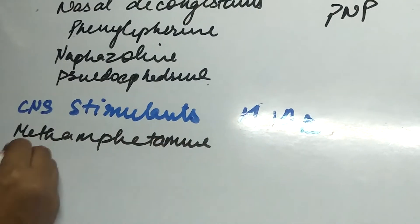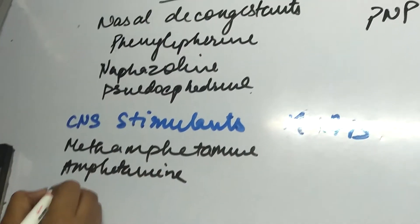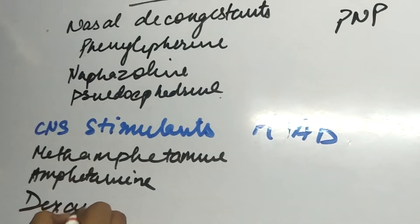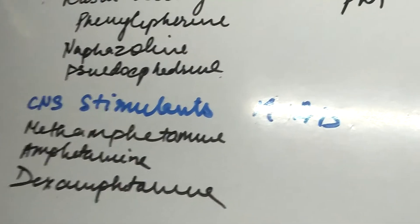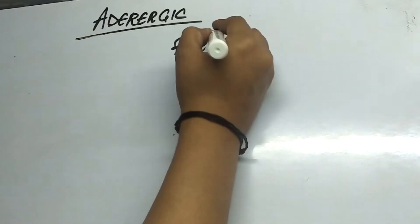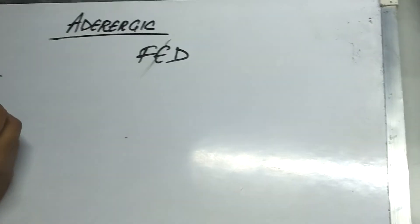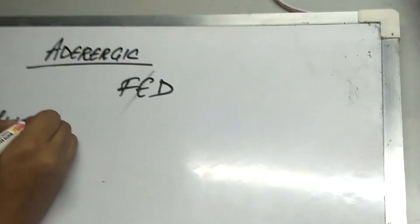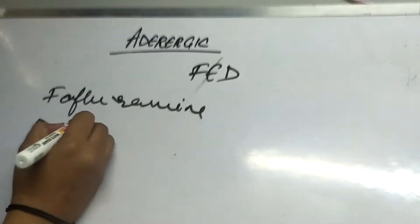Then the second last one is anorexics. In anorexics we have FED. Fenfluramine and dexfenfluramine.